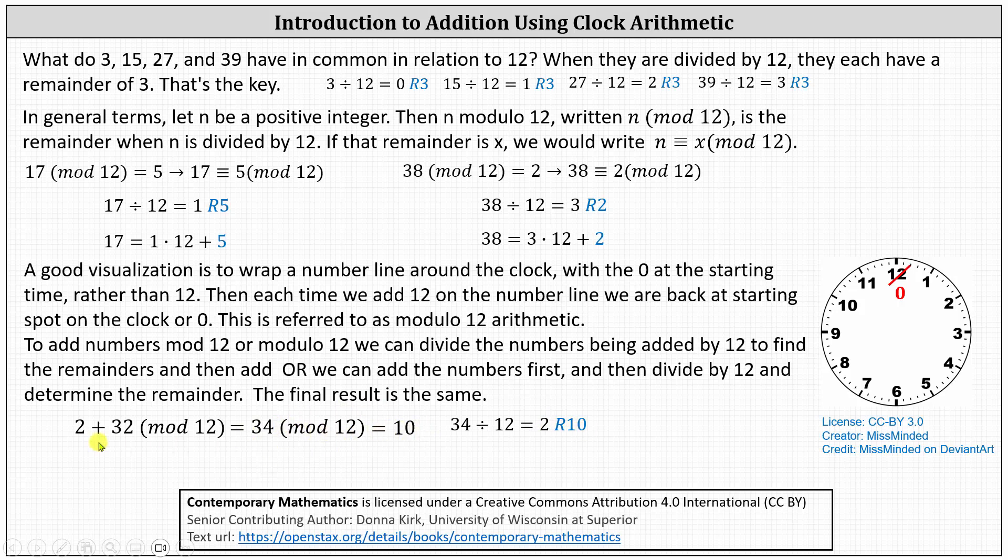The other option is to divide the 2 and 32 by 12 first, meaning we first determine 2 mod 12 and 32 mod 12. Well, of course, 2 mod 12 is equal to 2, and 32 mod 12 is equal to 8, and 2 plus 8 is equal to 10. In both cases, the result is 10.